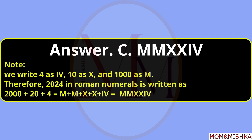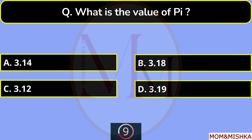How is 2024 written in Roman numerals? The answer is option C and the complete solution is given in the notes. What is the value of pi? It's 3.14, option A.